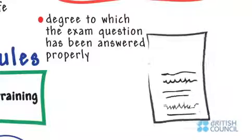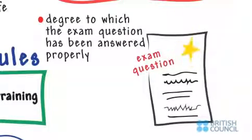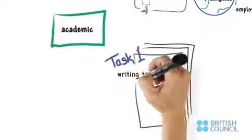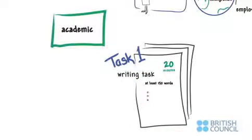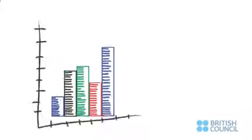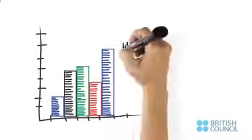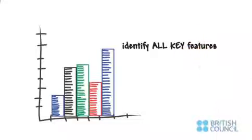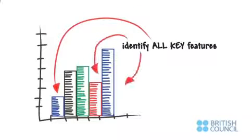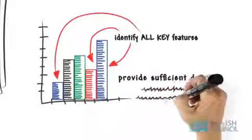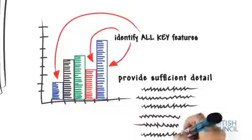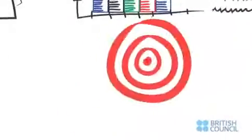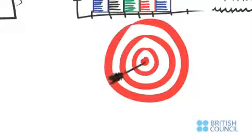These criteria focus on the degree to which the exam question has been answered properly. In the academic module, there is a writing task of at least 150 words where you should summarize, describe, or explain a table, graph, or diagram. You might be expected to make comparisons too. Successfully negotiating this academic task 1 means you will need to identify all the key features in the diagram. You might lose marks if important details are left out. Provide sufficient detail for a meaningful explanation, not too much detail, not too little. Ensure accuracy when referring to data or describing trends or processes.